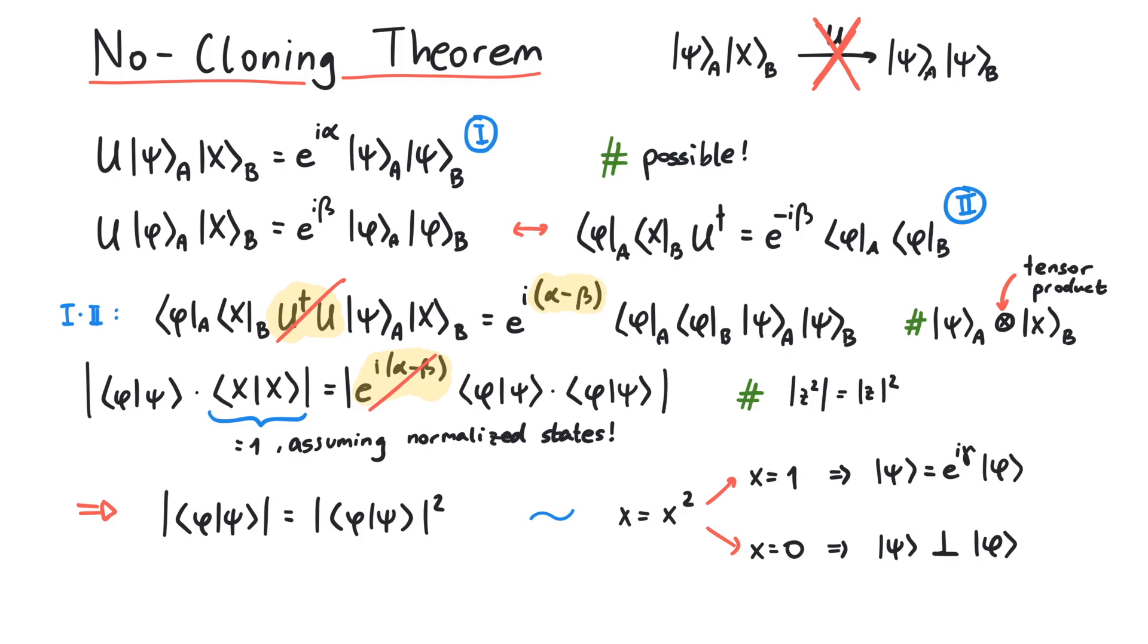So the conclusion of the no-cloning theorem is that we can either choose to only clone one specific state, which is boring, or have the option to clone all states that are orthogonal to some state, but not any arbitrary state.